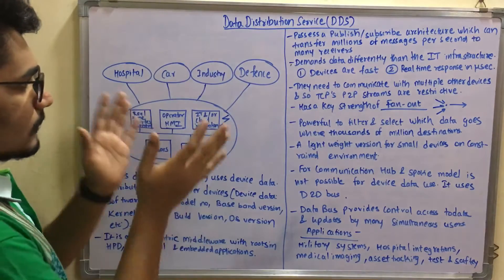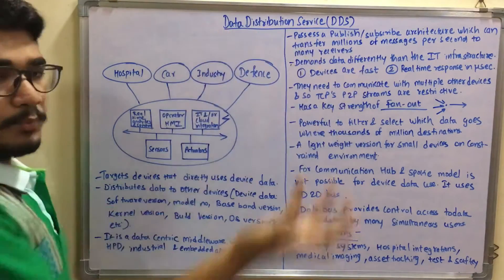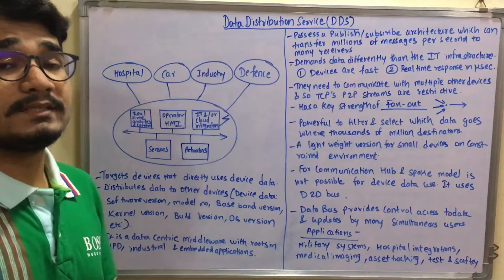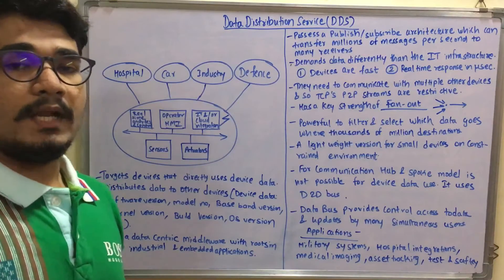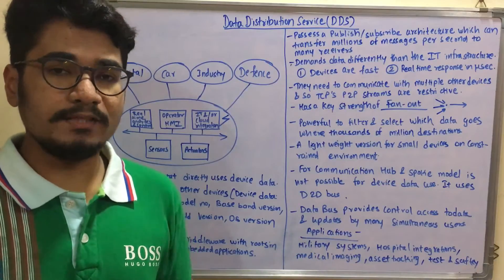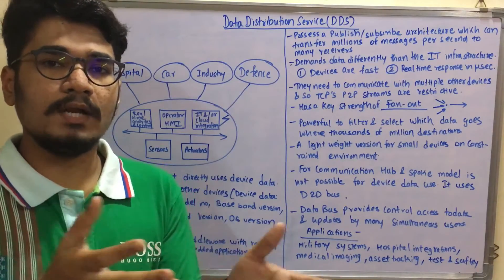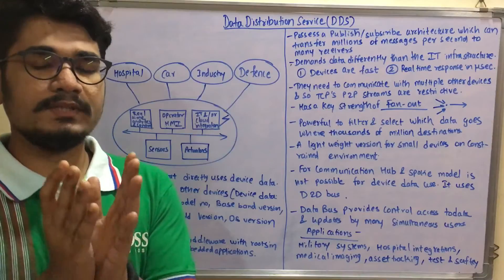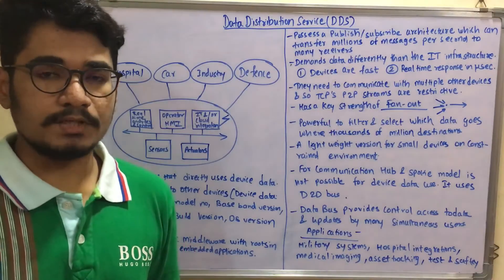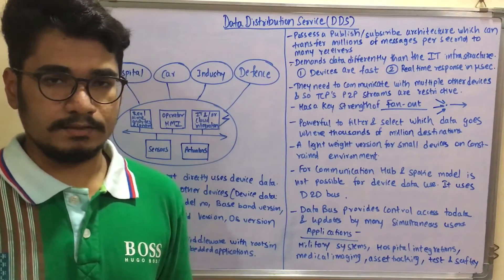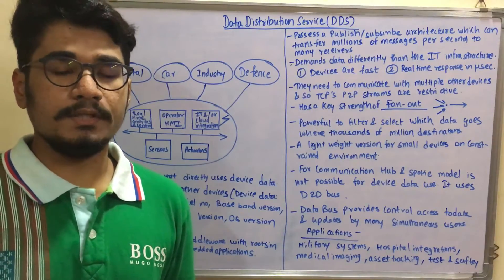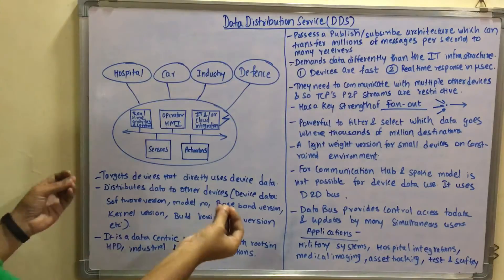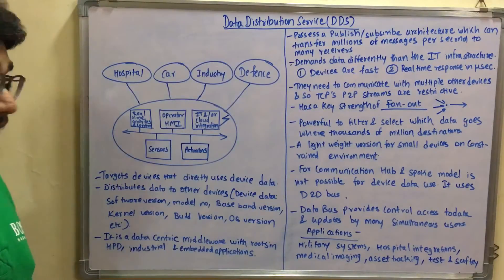From the name itself, Data Distribution Service is a service that distributes data — specifically device data. For example, take a scenario of an Android smartphone wanting to communicate with another device like Google Alexa or Siri. The device data can include the kernel version, OS version, baseband version, model number, and what type of operating system it is using.